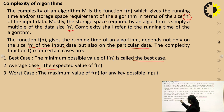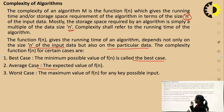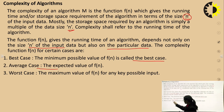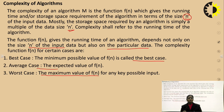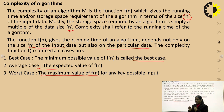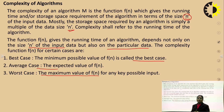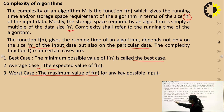Average case is the expected value of f(n) — the average time the algorithm takes to execute. Worst case means the maximum value. In a sorting algorithm, the worst case is when the input array is in descending order but needs to be arranged in ascending order.